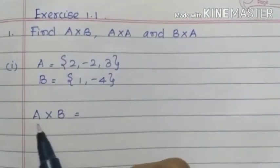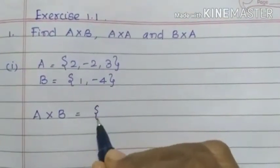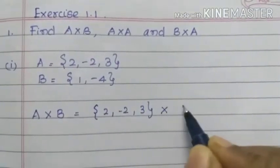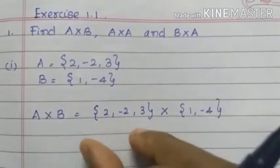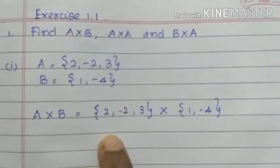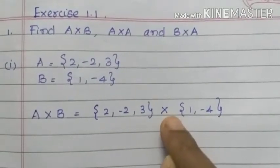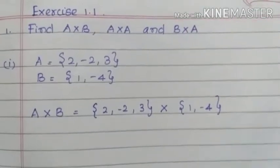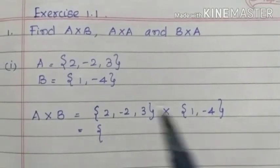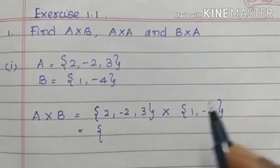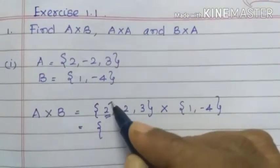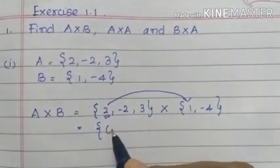A cross B — multiply A by B. A equals 2, minus 2, 3 and cross B being 1, minus 4. So 2 sets multiply. We need a set — first point, second multiplication. We have ordered pairs. We need to get the second point, then the third point, then the first element. So 2, 1, 1 — that's an ordered pair.